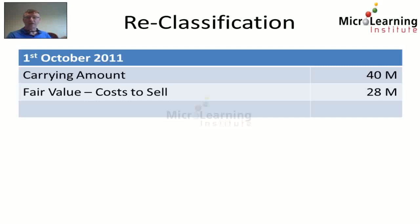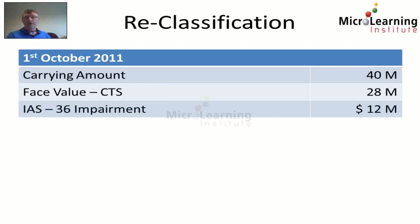As 28 million dollars is lower than 40, we now need to impair the carrying amount of the cash generating unit by 12 million dollars, in line with IAS 36 impairment.